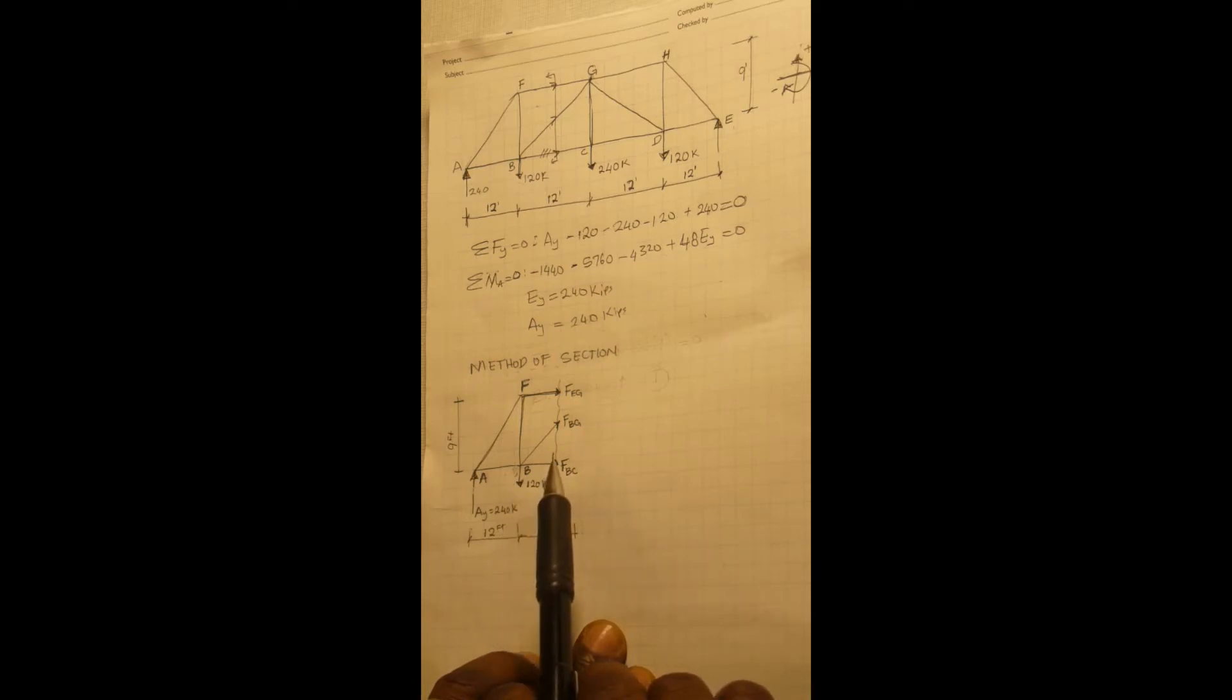Force F, force EG and force BG can be eliminated if we take our moment about joint at G and then we'll be left with force BC, which is what we are looking for.